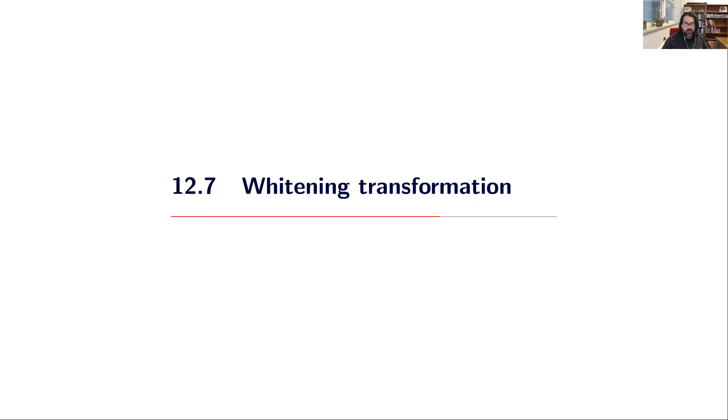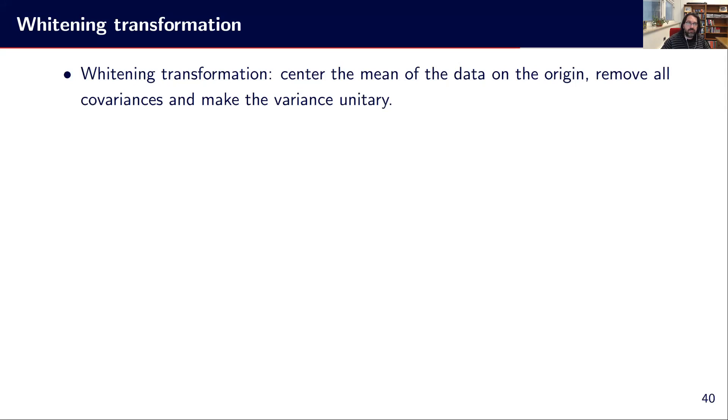Now we will talk about whitening transformation, which is quite similar to PCA but for a different mean. With whitening transformation, we want to center the data on the origin and remove all covariances to make the variance unitary. So we want to get an identity matrix as the covariance matrix describing our distribution of data after the whitening transformation.